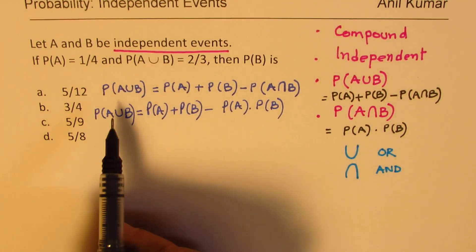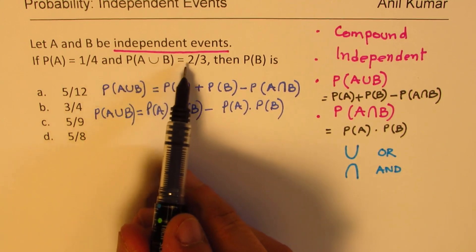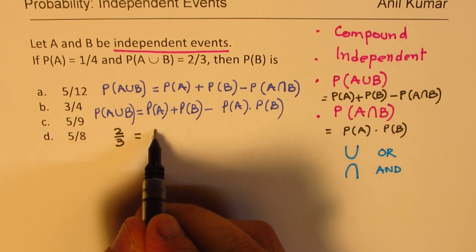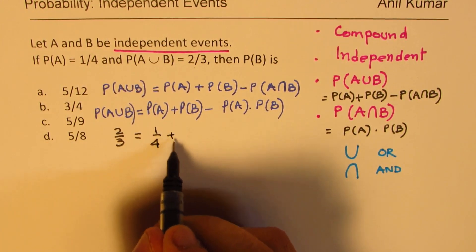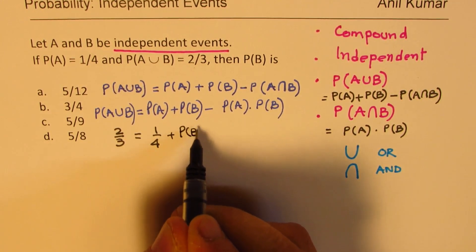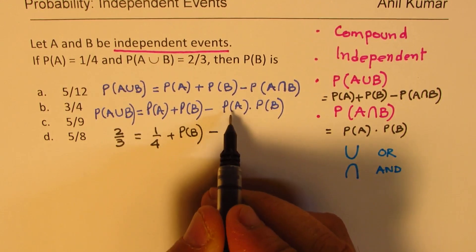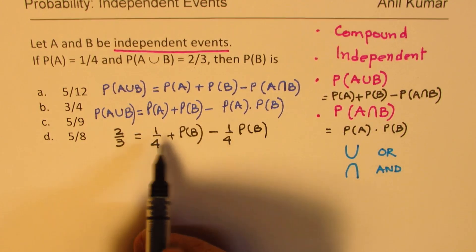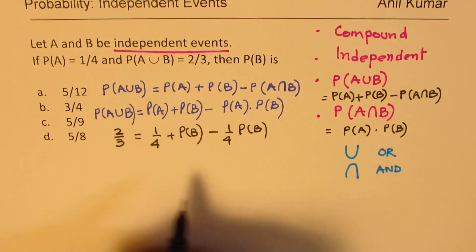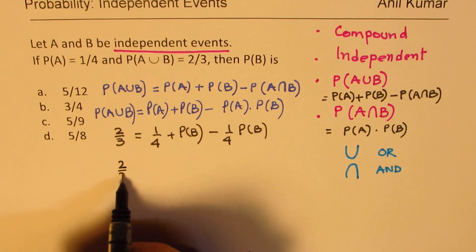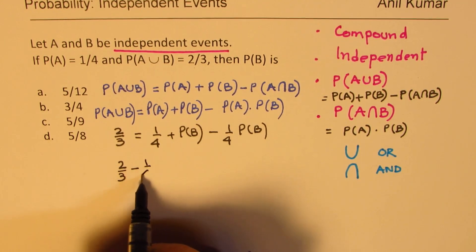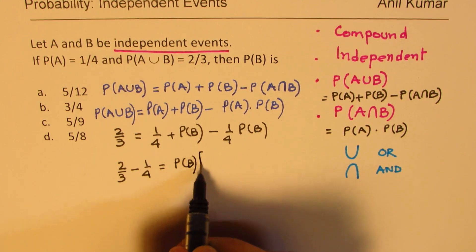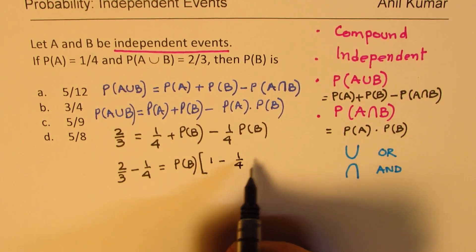Now we will substitute the values. We know probability of A union B is 2 over 3. Probability of A is 1 over 4. Probability of B we need to find. Here we know probability of A is 1 over 4 and probability of B we need to find. We will rearrange and then solve. So, we have 2 over 3, take away 1 over 4 equals to probability of B, we can take that as common. 1 minus 1 over 4.